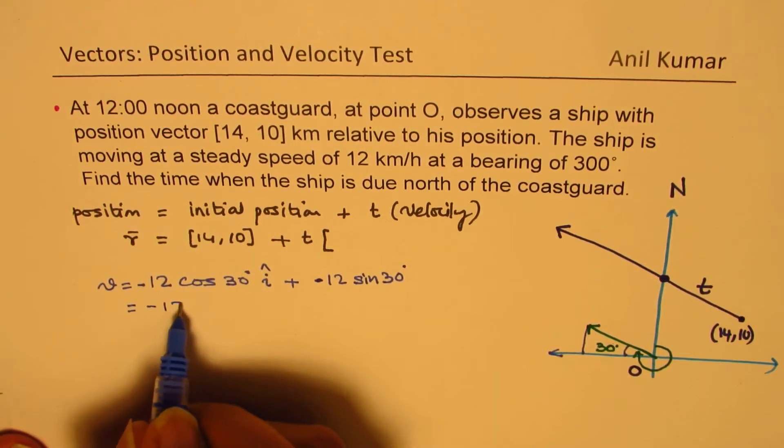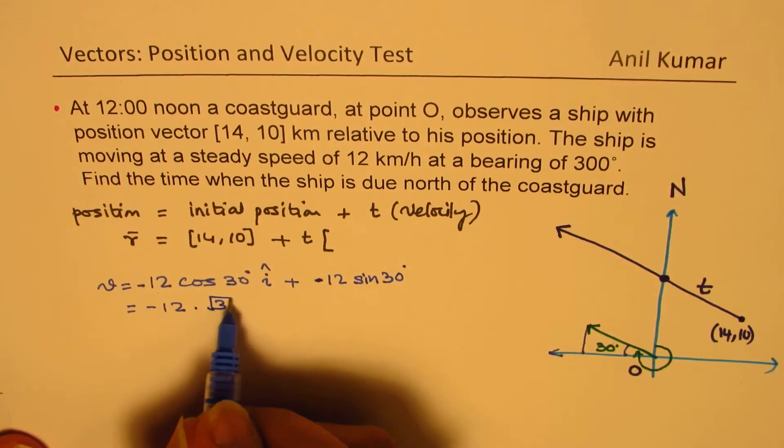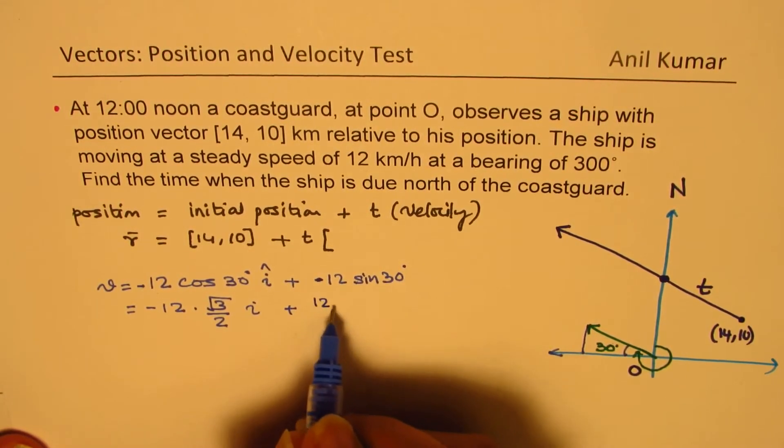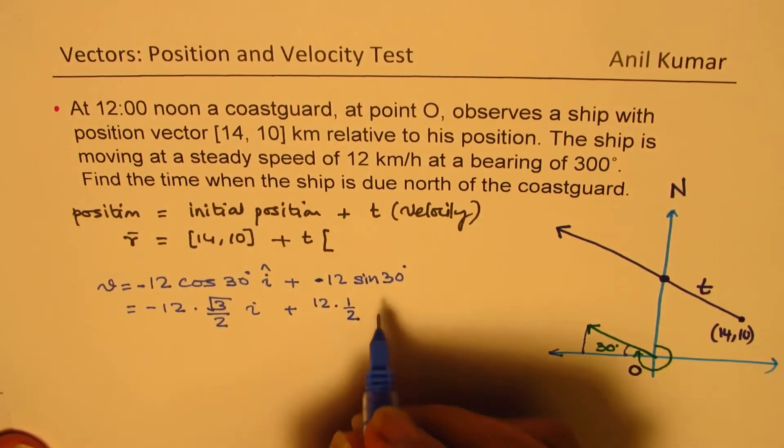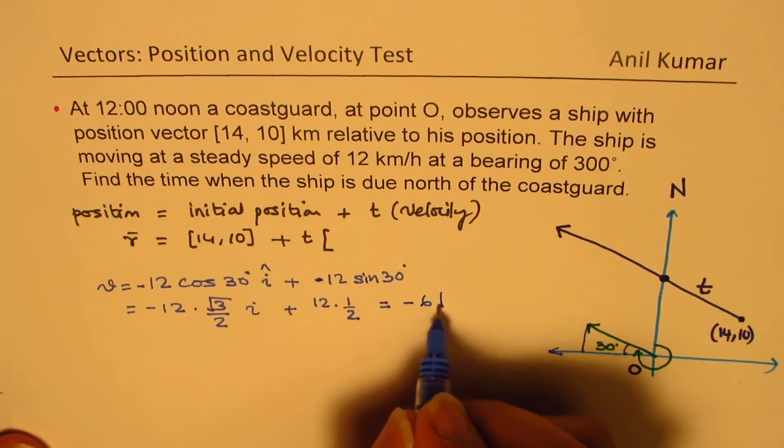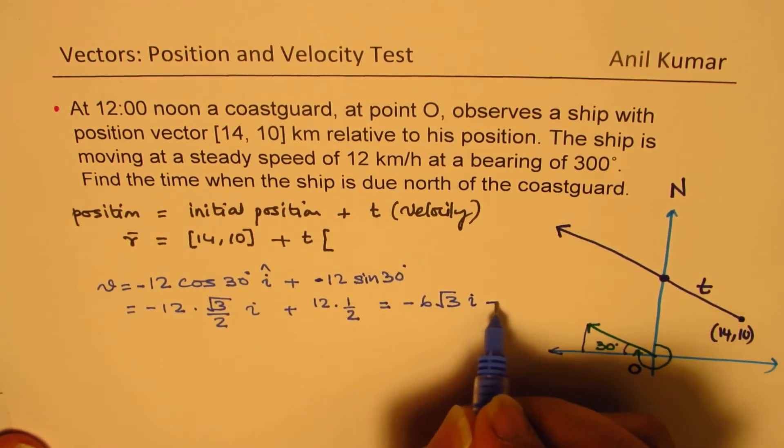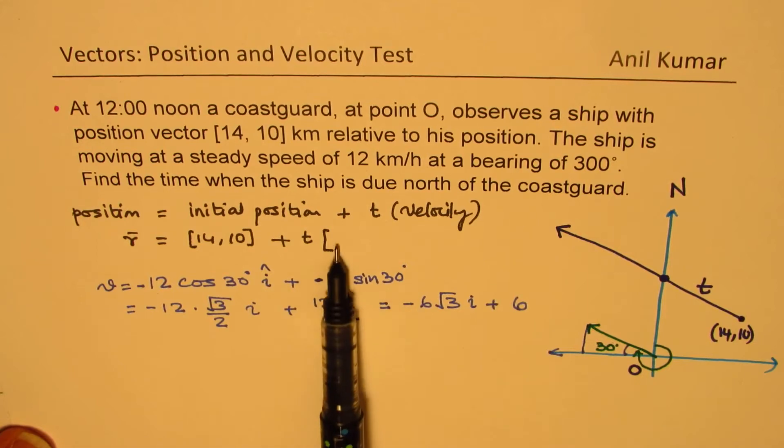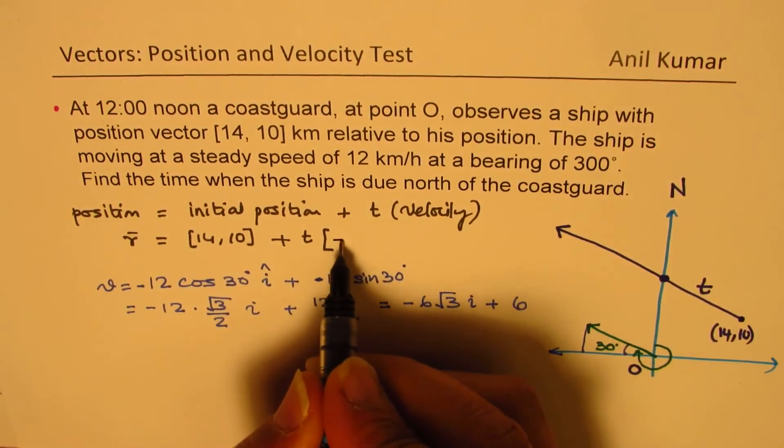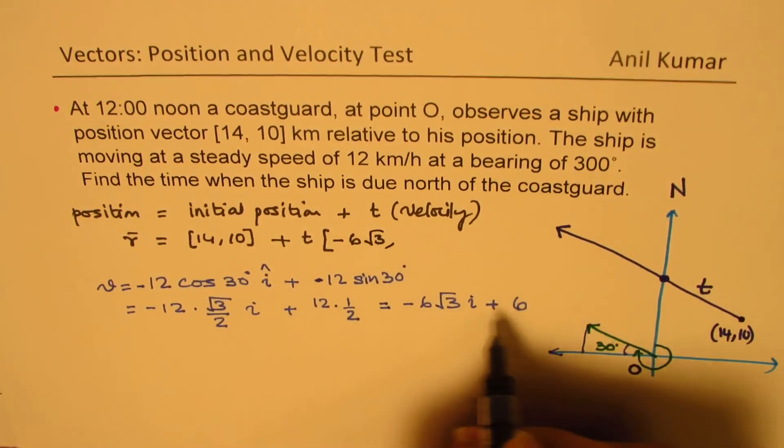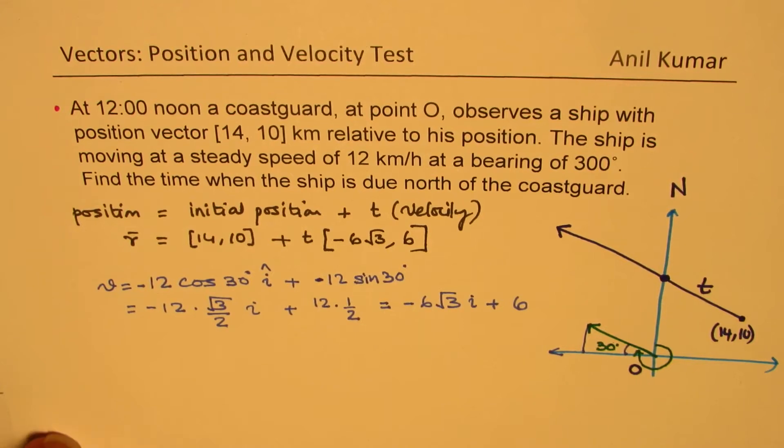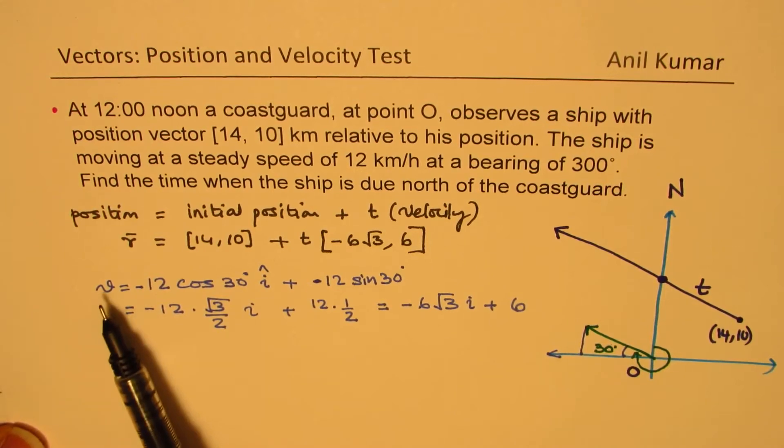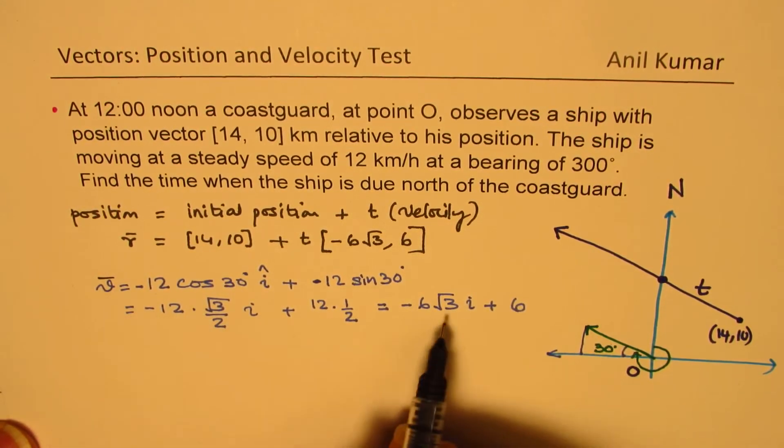So this is 30, square root 3 over 2 I, and this is half. So it is 12 times half, or you could write this as minus 6√3 I plus 6. So that becomes your V. I'm going to place this value right there now. So we have this as (-6√3, 6). That is why we did earlier a few questions. It helped us understand the strategy.